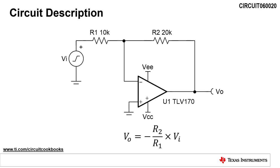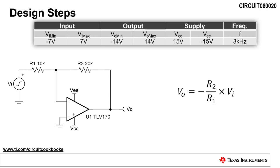This video explains how to design this circuit using the TLV170 in a few easy steps. This circuit inputs a voltage from negative 7 volts to positive 7 volts, and outputs a voltage from negative 14 volts to positive 14 volts. The design uses a dual 15 volt supply and has a cutoff frequency of 3 kilohertz.